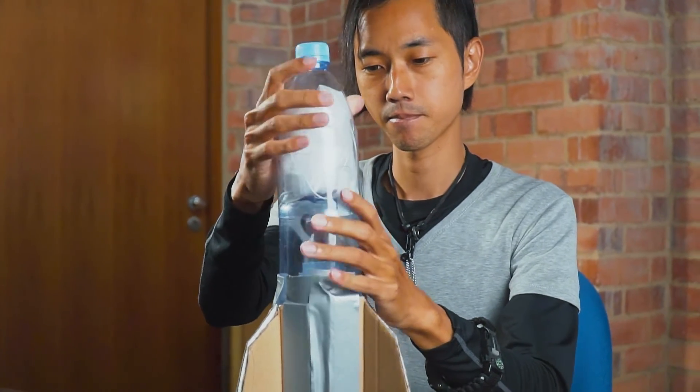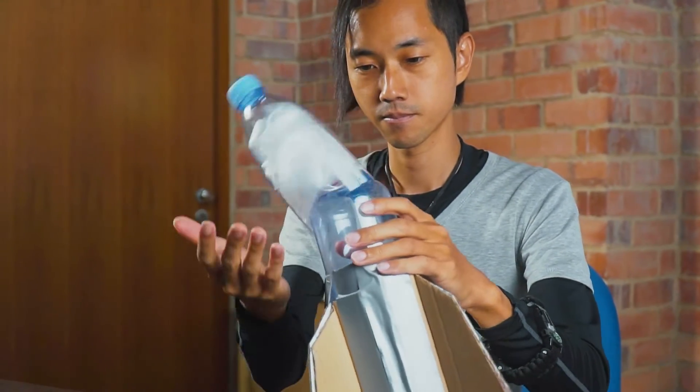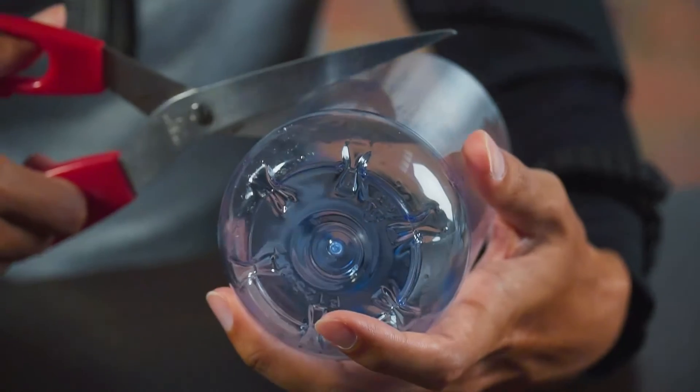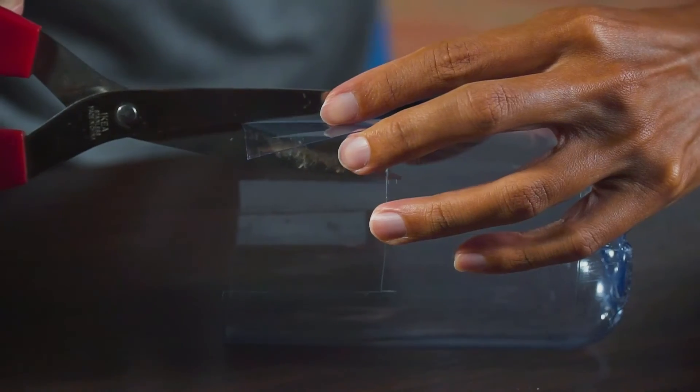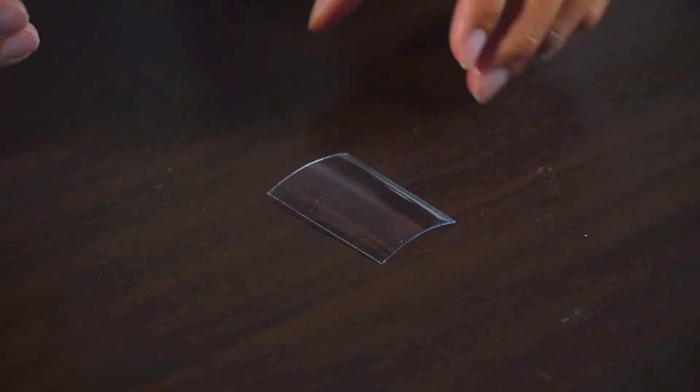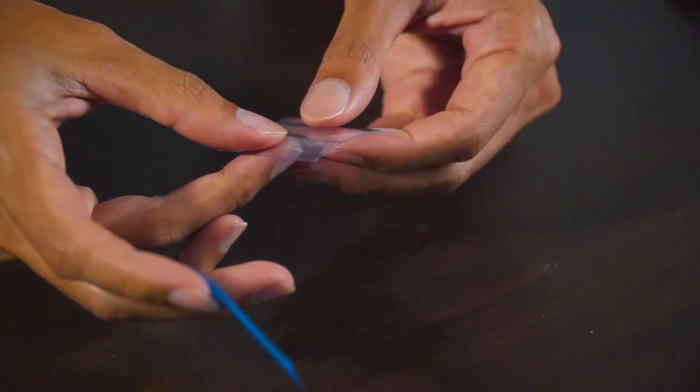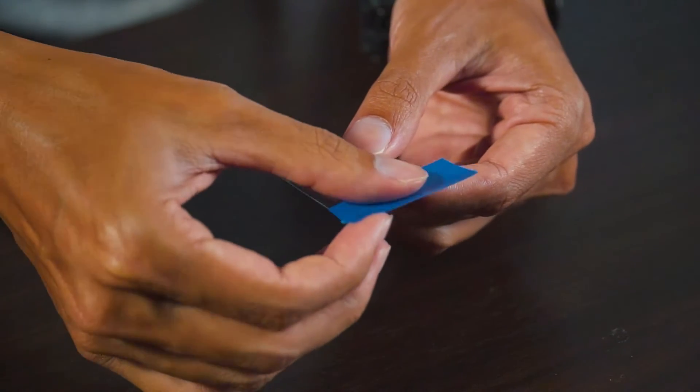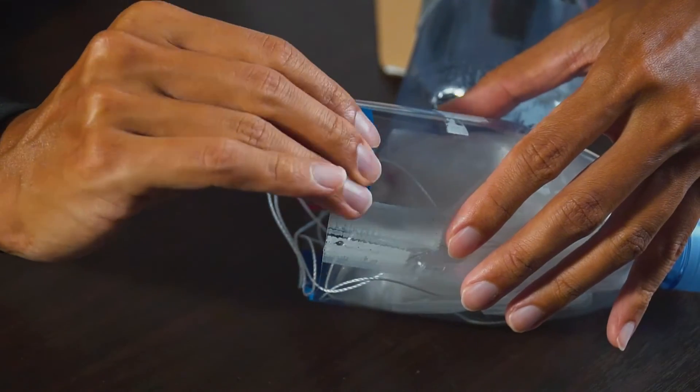But if your cone looks like this and cannot even stay in place, you'll need to modify it. Cut four plastic strips and tape them to the side of the cone. This way, the cone will fall off and release the parachute once the rocket reaches the highest point.